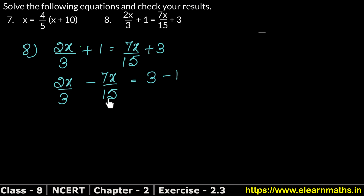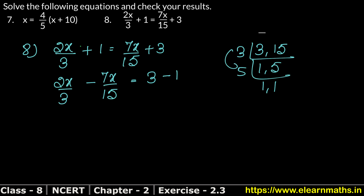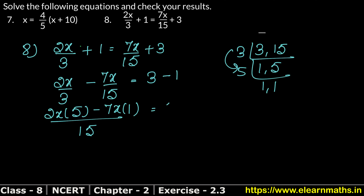Now, find LCM of 3 and 15 since these are fractions. 3 fives are 15, so LCM is 15. Multiply: 2x times 5 is 10x, minus 7x as it is, upon 15. Equals 2. Opening the brackets: 10x minus 7x upon 15 equals 2.